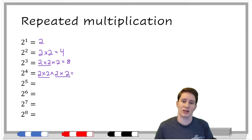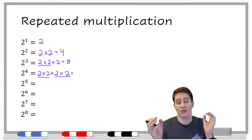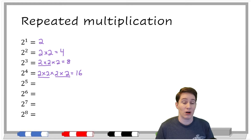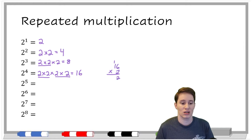We also have the option of grouping together our multiplication. So we could do the first two twos together to get four, and the last two twos together to get four, and then multiply those together and get 16. Multiplication has this cool property where you can group them in different orders. Two to the fifth — we'd have five twos; we already know that four twos gives us 16, so 16 times two is 32. And then two to the sixth power would be 32 times two.